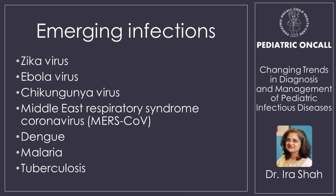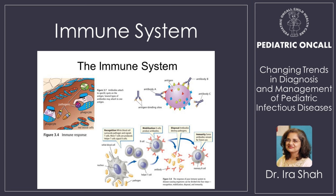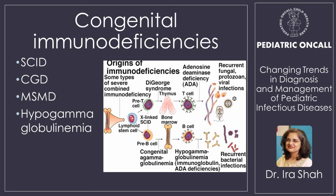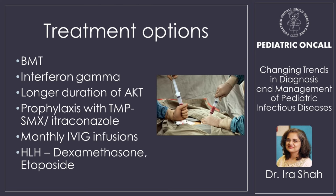We are still talking about emerging infections — Zika virus is now in Gujarat, Rajasthan, and Madhya Pradesh. Ebola virus, Chikungunya virus, MERS virus, and the resurgence of dengue, malaria, and TB. Even though we eradicated some diseases, we got more in our basket. The understanding of the immune system — innate and specific immunity — and congenital immunodeficiencies changed the way we treat. We started talking about bone marrow transplant, interferon gamma in CGD, longer duration of treating patients with MSMD, prophylaxis with co-trimoxazole and itraconazole, and monthly IVIG injections in agammaglobulinemia.